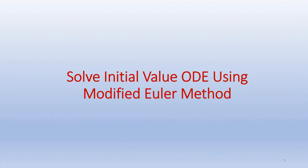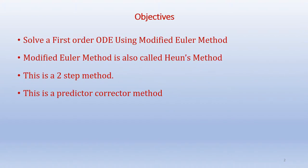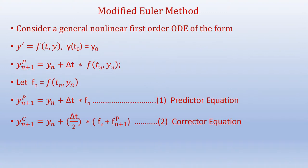In the last videos we solved initial value ODE problems using explicit Euler method and implicit Euler method. In this video we are going to solve the initial value ODE problem using modified Euler method. This modified Euler method is a higher order method and can produce more accurate results. The explicit Euler method and the implicit Euler method are one-step methods, while the modified Euler method is a predictor-corrector method.